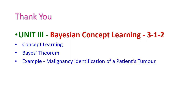So far, we have learned what is concept learning and Bayes' theorem. In Bayes' theorem, we have seen the likelihood, prior probability, and posterior probability. After that, we have seen one example to explain this Bayes' theorem — that is, malignancy identification of a patient's tumor. In the next class, we will see another important concept from Bayesian concept learning. Thank you.